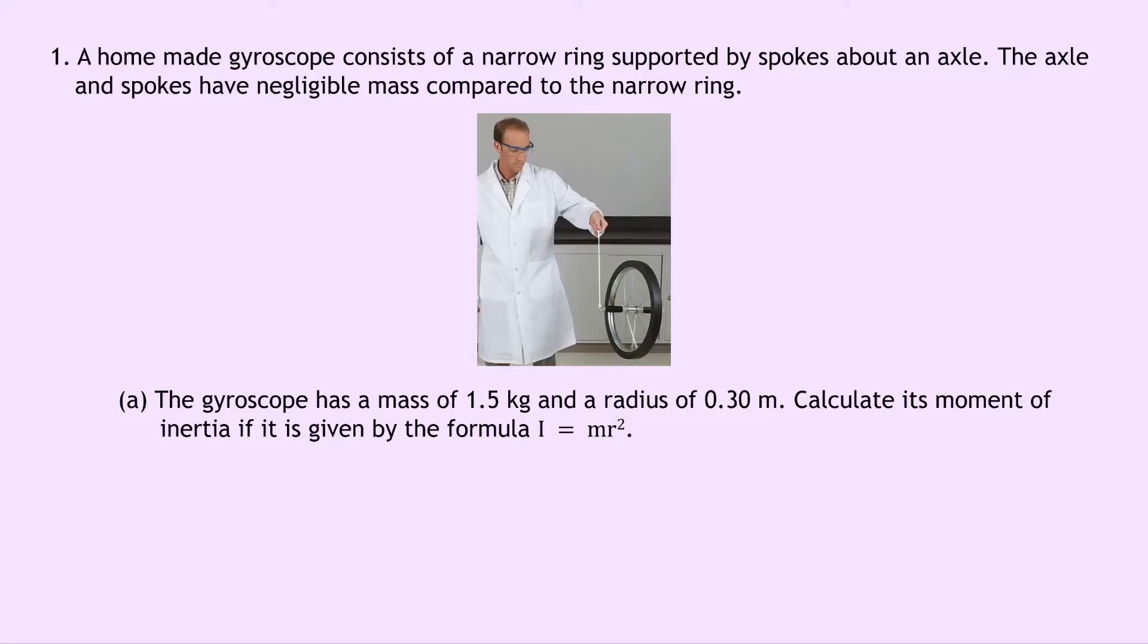So let's get started. In our one and only question it says a homemade gyroscope consists of a narrow ring supported by spokes about an axle. The axle and spokes have negligible mass compared to the narrow ring, so that means we can just ignore the mass of this axle and the spokes.